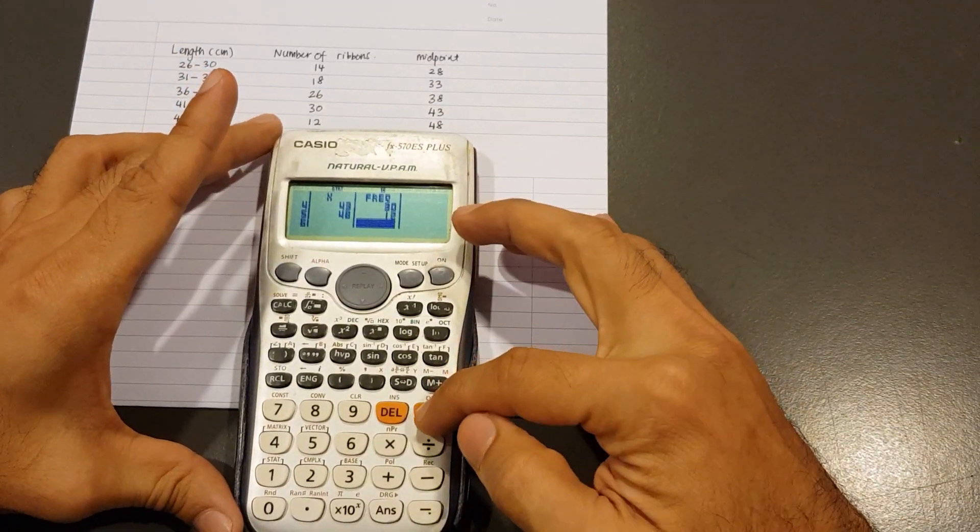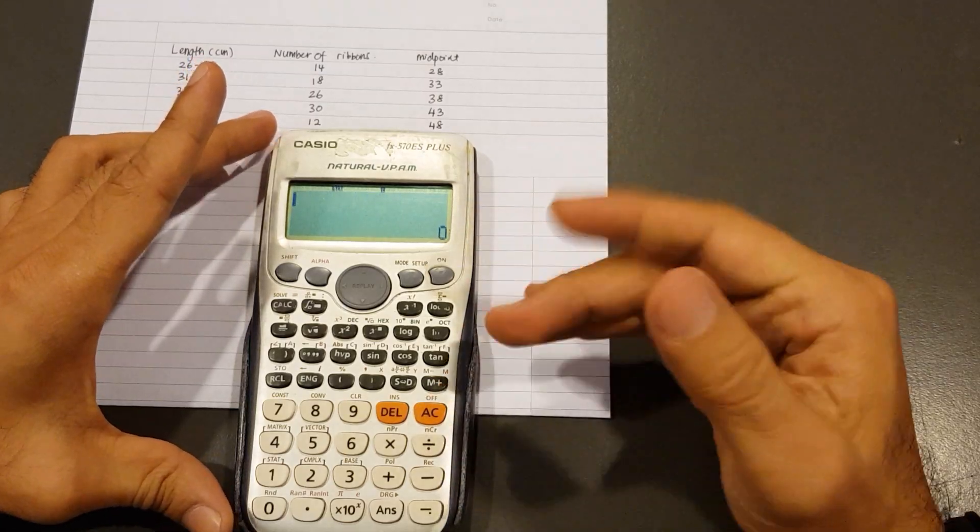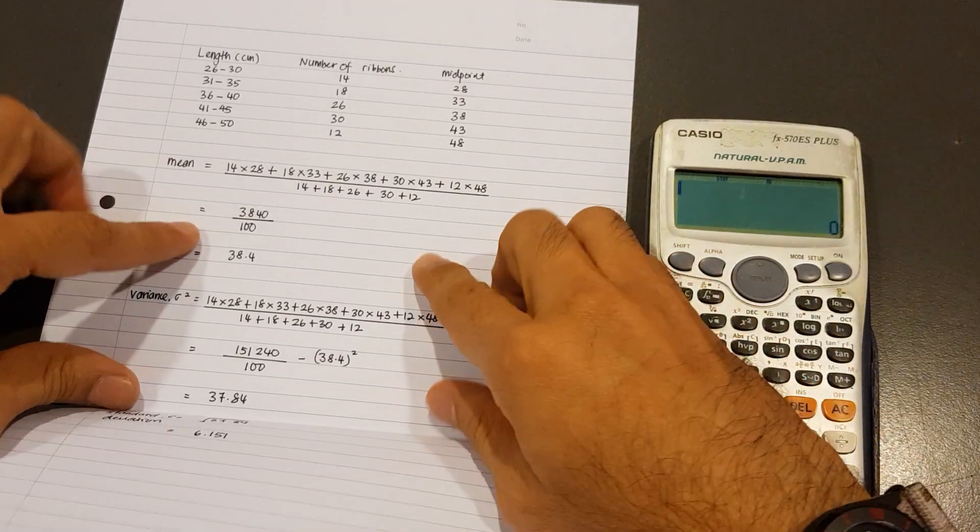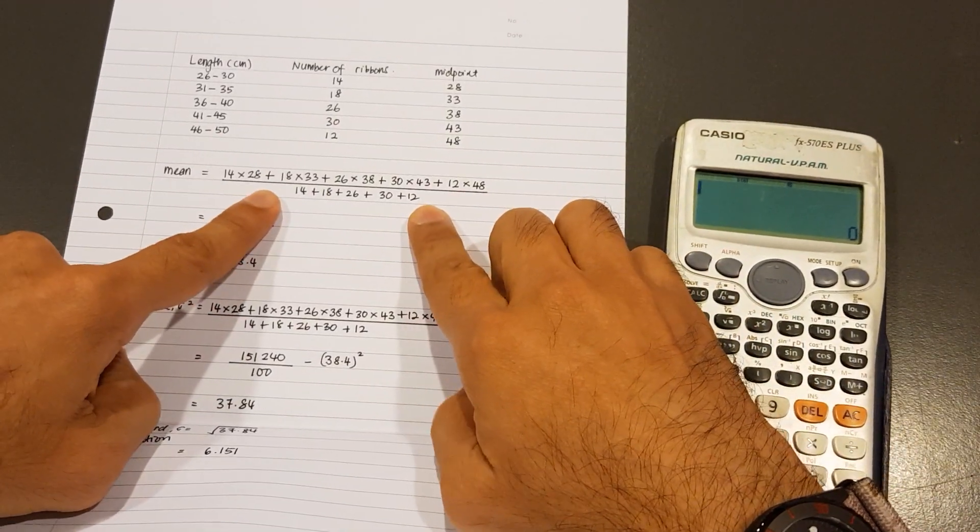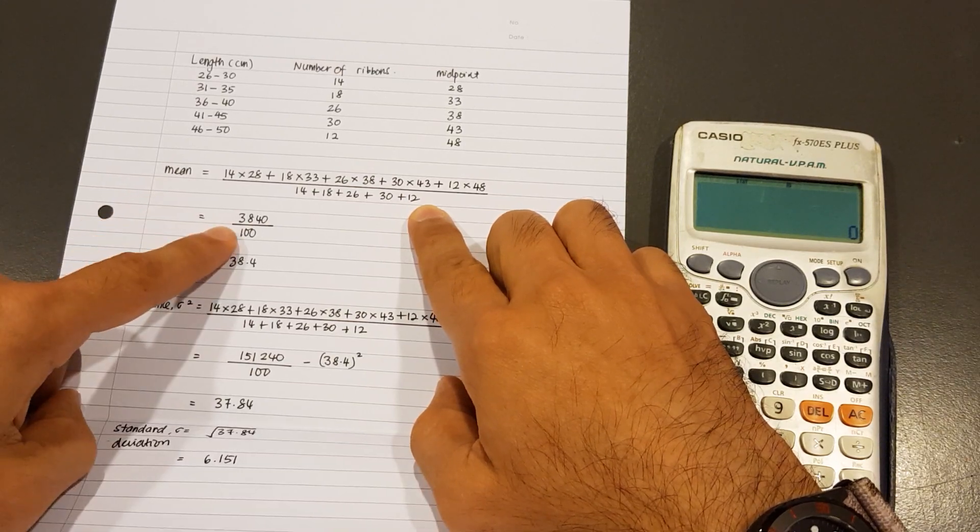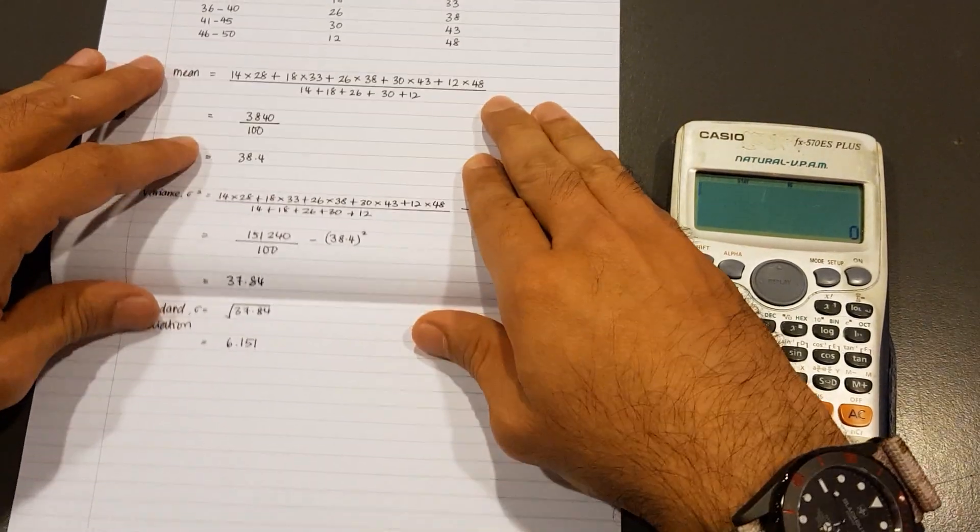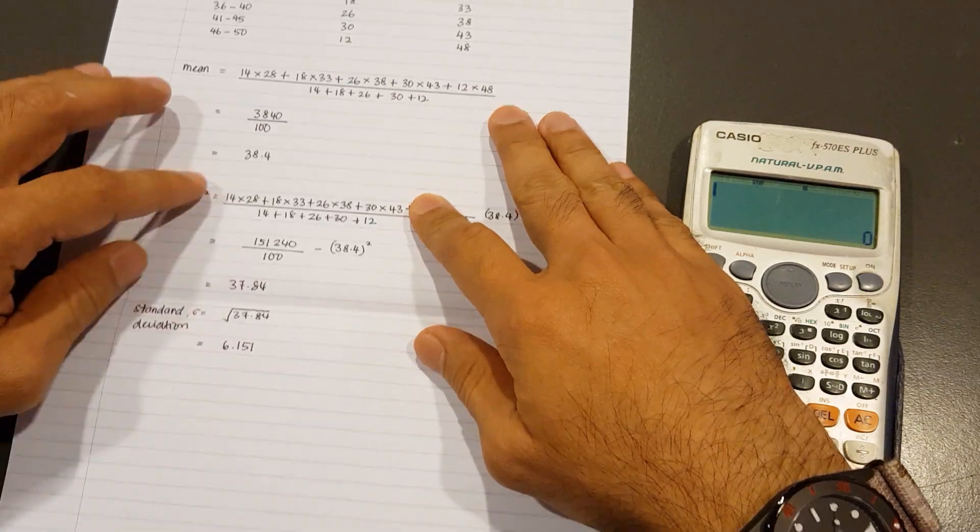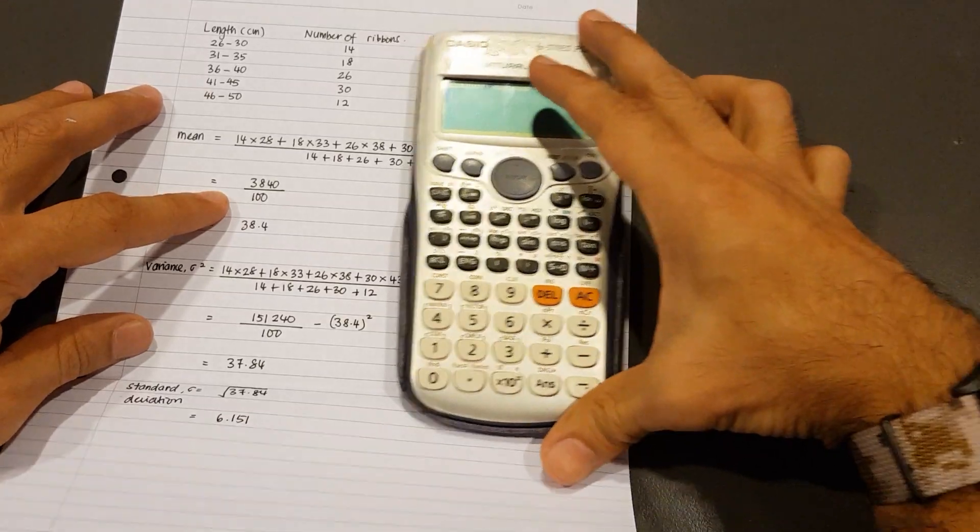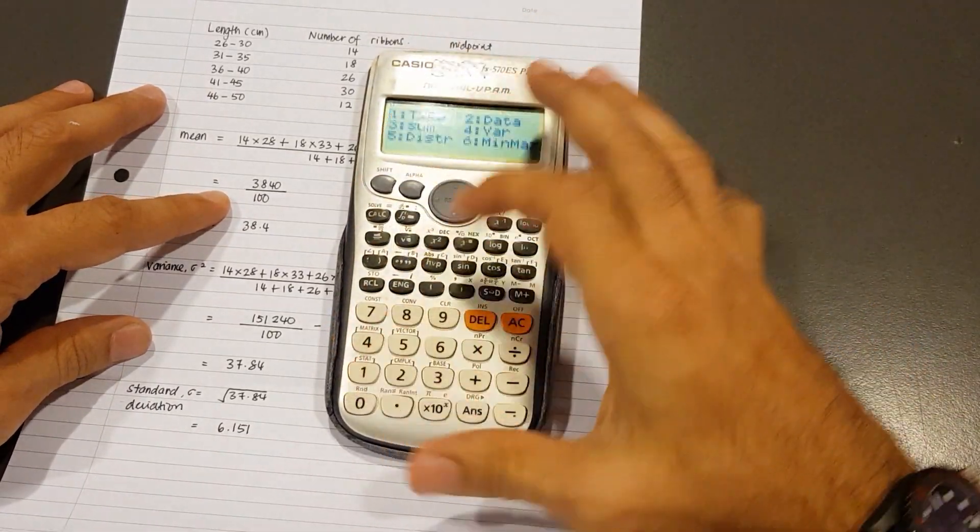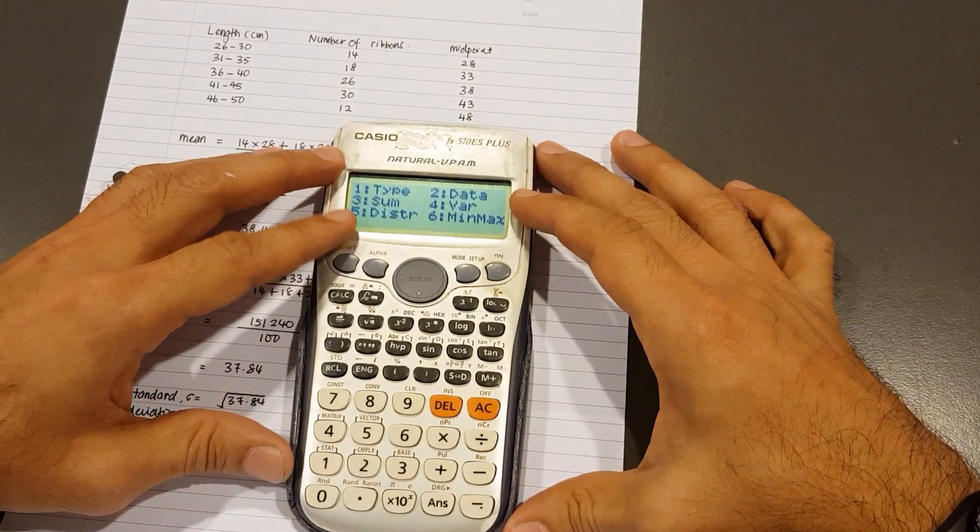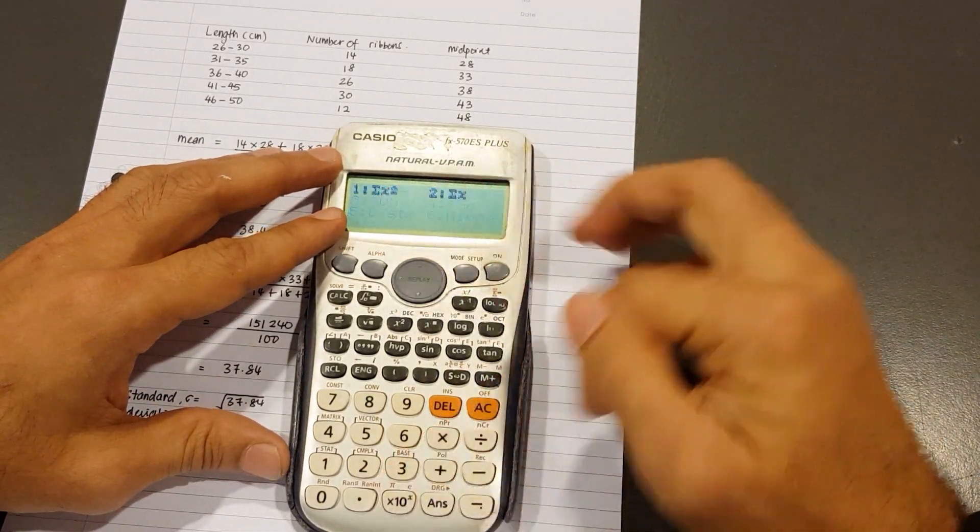Now I can press this orange button AC to clear that. To get the values as I've shown you before, we need to prepare the working to find mean. Let's start with the mean first. Shift 1. But this time, we're looking at number 3, which says Sum.